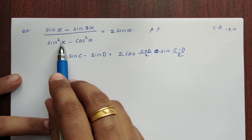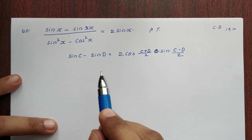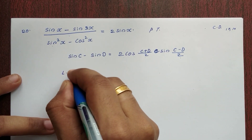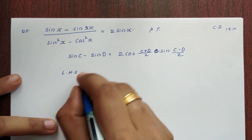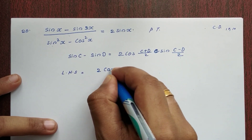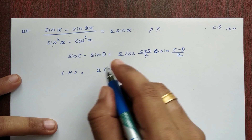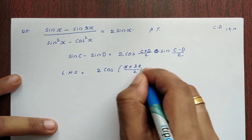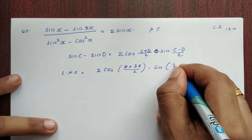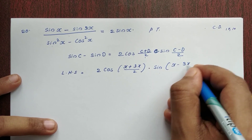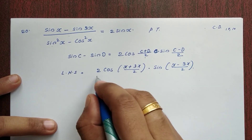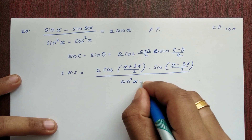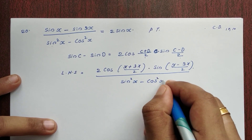The denominator is sin squared x minus cos squared x. We will apply the CD formula to the numerator. So LHS equals 2 cos((x + 3x)/2) into sin((x minus 3x)/2), the whole divided by sin squared x minus cos squared x.